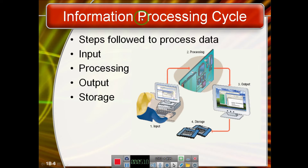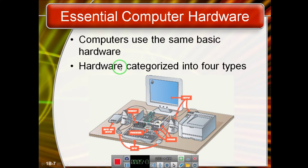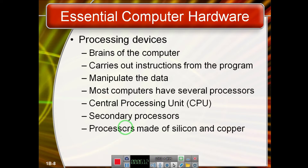We call this the information processing cycle. It has four phases: input of data, processing of data and transforming it into information, displaying the information to the user, and storing the information. There are a few essential ingredients of a computer, like memory in the form of RAM, a processor, input devices such as a microphone, keyboard, or mouse, and output hardware like a speaker, LCD, LED, CRT, or printer.